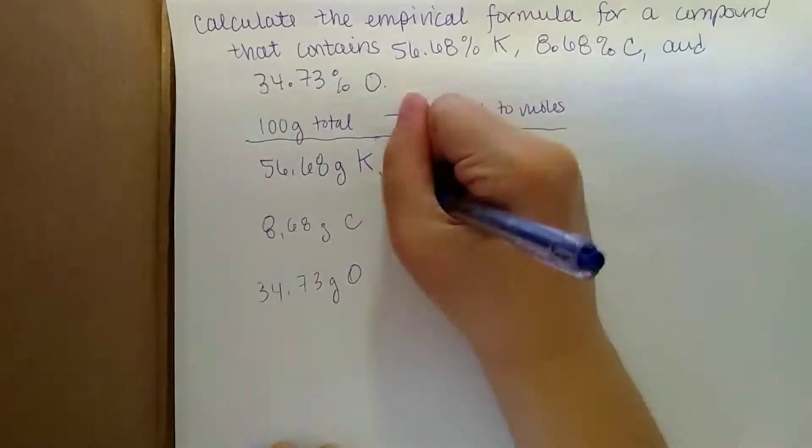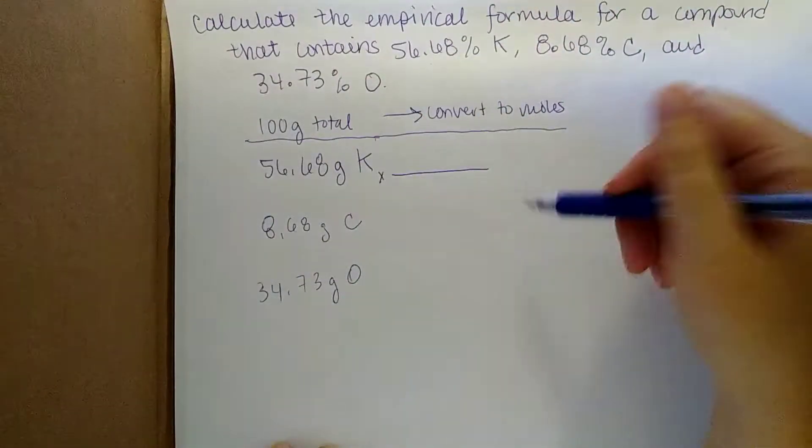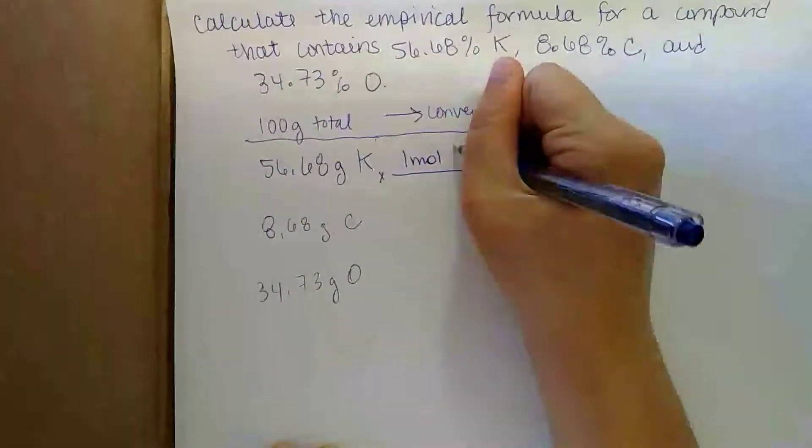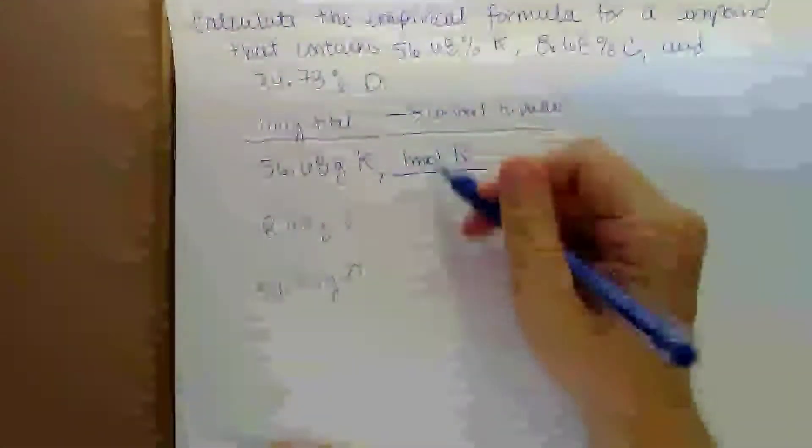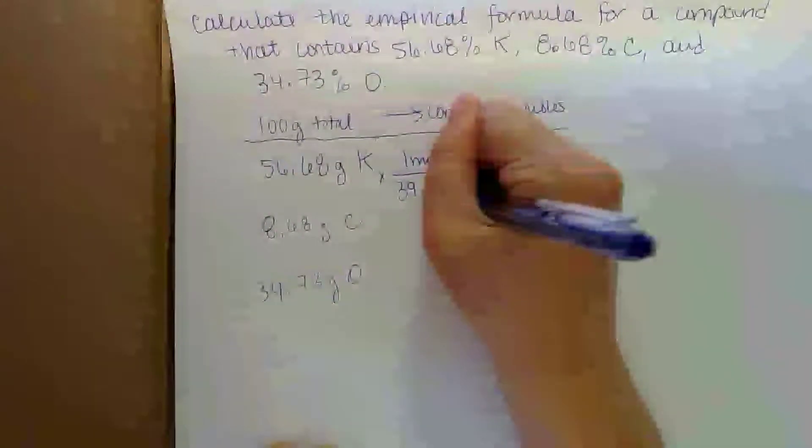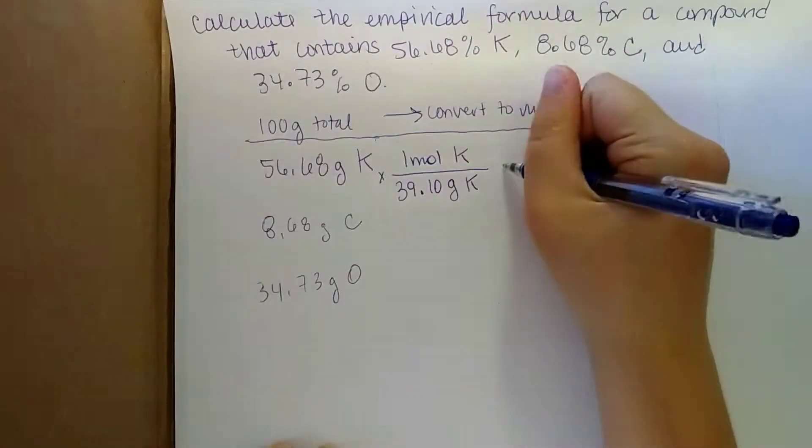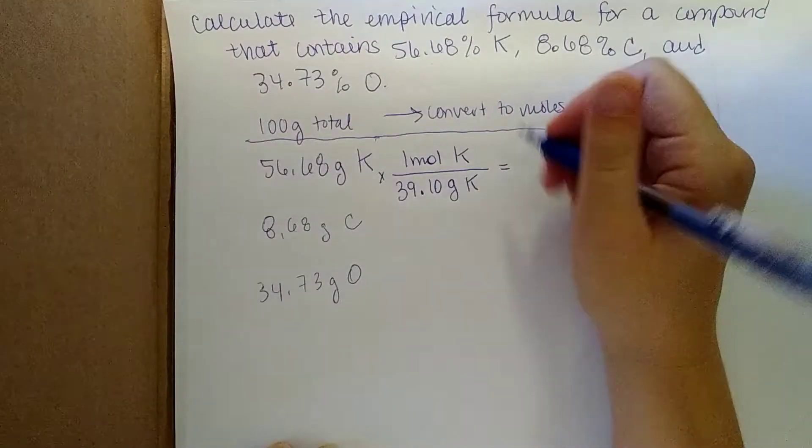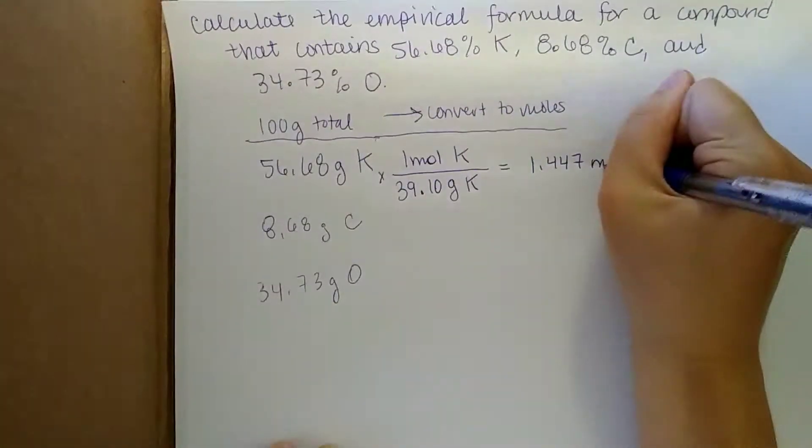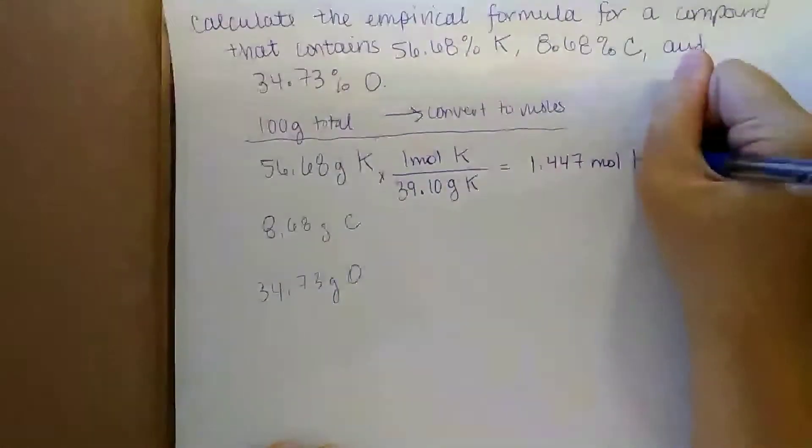Just by reading off their masses from a periodic table and coming up with a conversion factor. So if we want one mole of potassium, we need to look at our periodic table and figure out how many grams of potassium that would be. And from the periodic table, we can see it's 39.10. And if you're multiplying this across, you're going to get 1.447 moles of potassium.